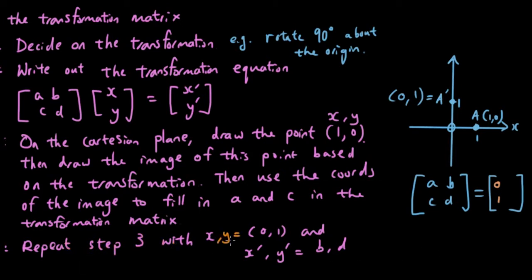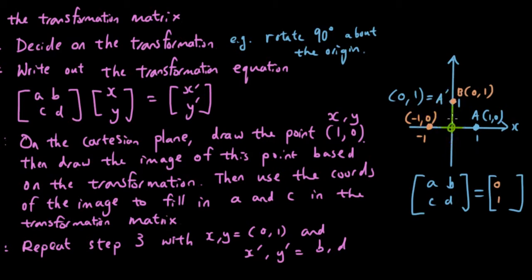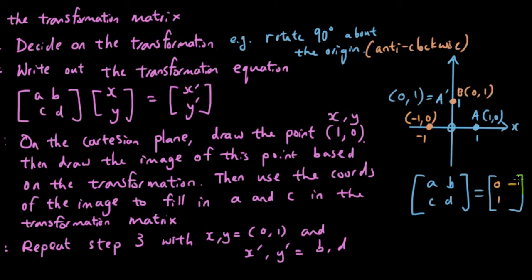Now we repeat with x, y equals 0, 1, which is point B. Rotating 90 degrees anti-clockwise, B ends up at negative 1, 0. So b and d equal negative 1 and 0. The transformation matrix for 90-degree anti-clockwise rotation is [0, negative 1; 1, 0].